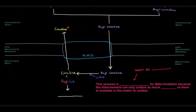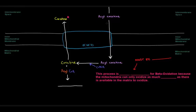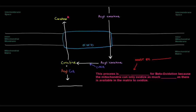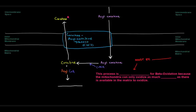Once acyl-carnitine is in the intermembrane space, it must cross the inner mitochondrial membrane into the matrix. This is accomplished by a transporter called CACT — carnitine-acylcarnitine translocase — which transports the acyl-carnitine from the intermembrane space into the mitochondrial matrix. Once in the matrix, a coenzyme A is attached to the acyl-carnitine to regenerate acyl-CoA and free carnitine.